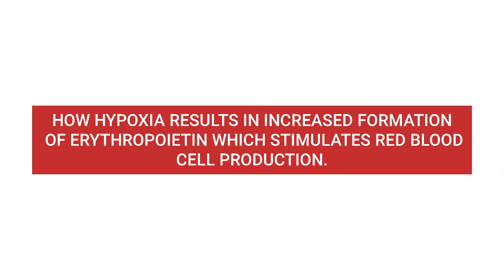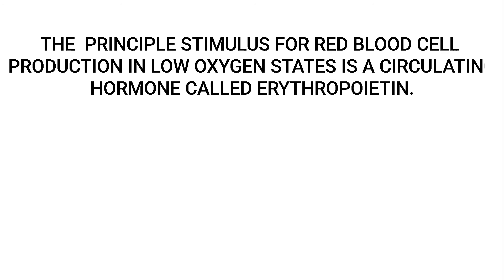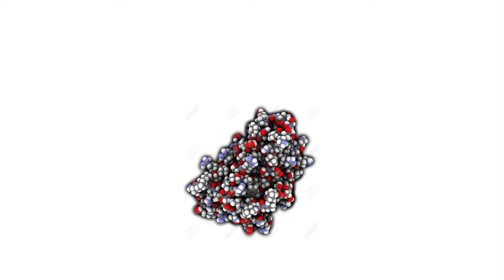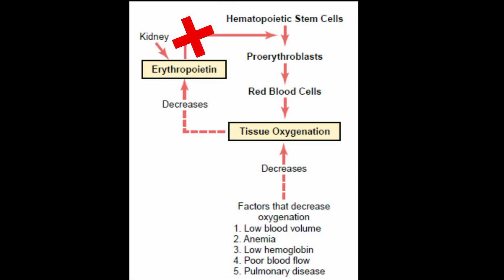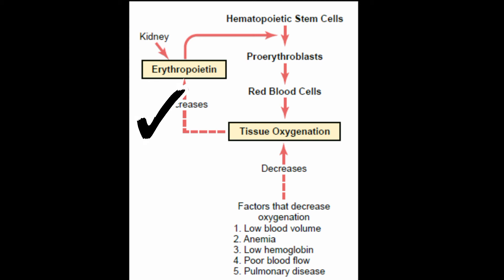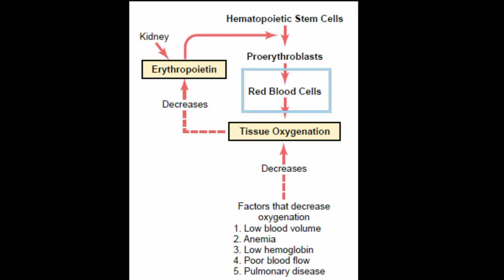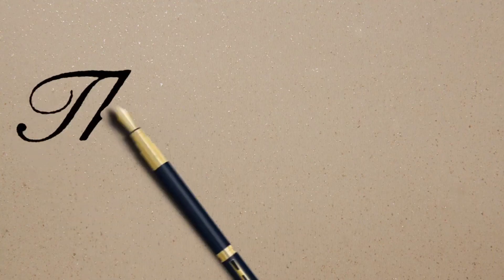The principal stimulus for red blood cell production in low oxygen states is a circulating hormone called erythropoietin. Erythropoietin is a glycoprotein with a molecular weight of about 34,000. In the absence of erythropoietin, hypoxia has little or no effect in stimulating red blood cell production. But when the erythropoietin system is functional, hypoxia causes a marked increase in erythropoietin production, which in turn enhances red blood cell production until the hypoxia is relieved.